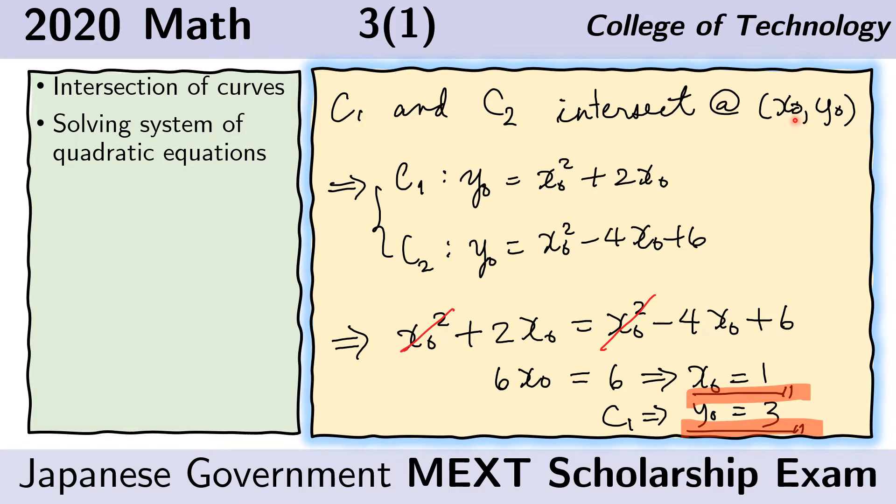We renamed the intersection point X sub O and Y sub O. The next step is simply to substitute the Y here with the Y here and equate them because that is how we solve systems of equations. So here we have X sub O squared plus 2X sub O that goes to the left side and on the right side, this is equal to Y sub O and this is also equal to Y sub O and we want to get rid of the Y sub O so we can find the X sub O.